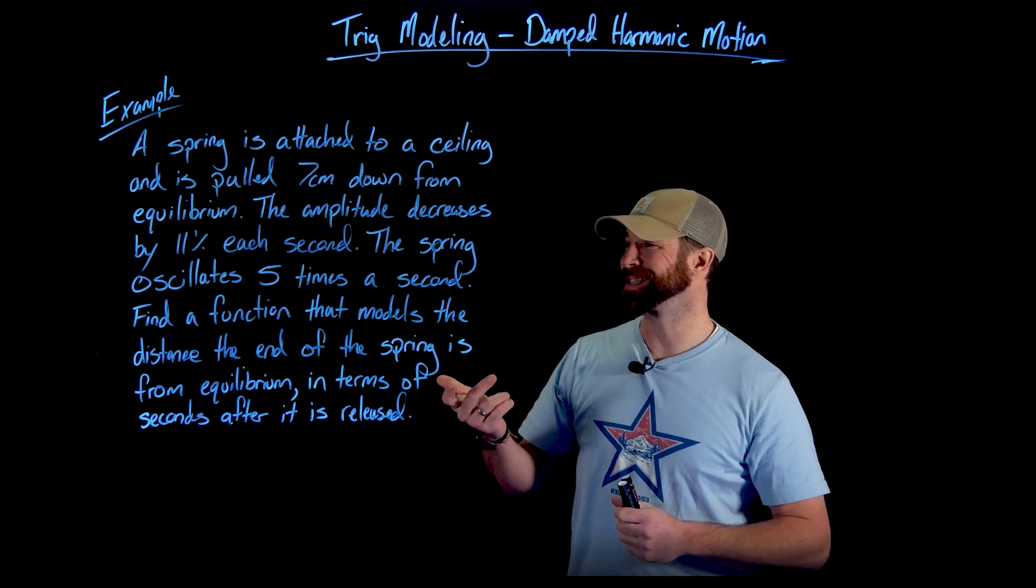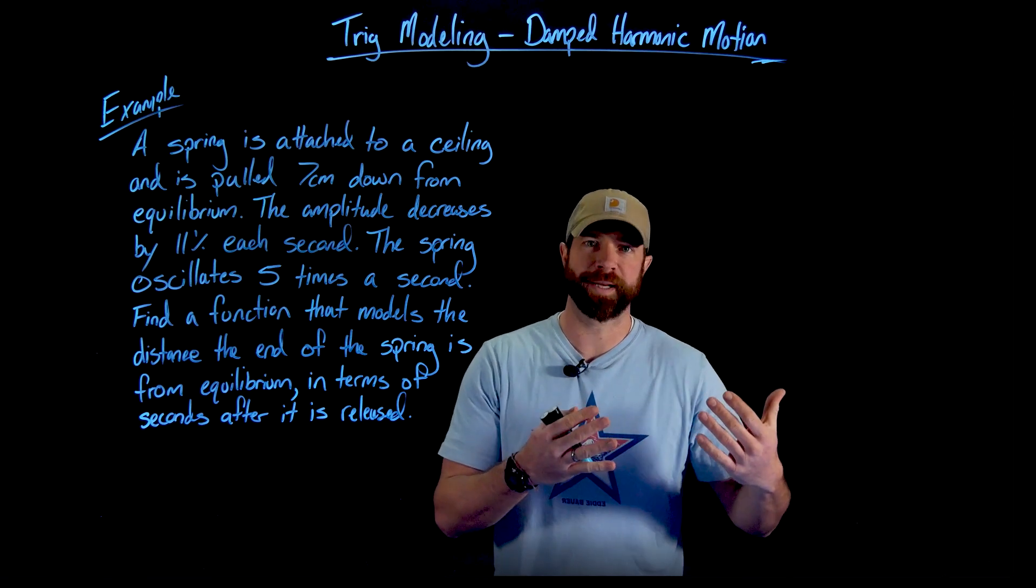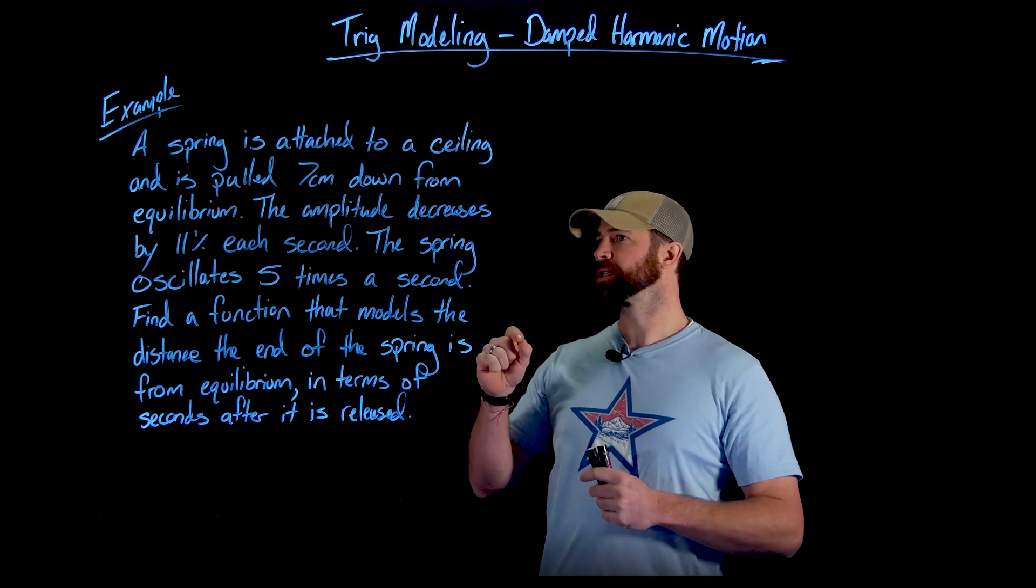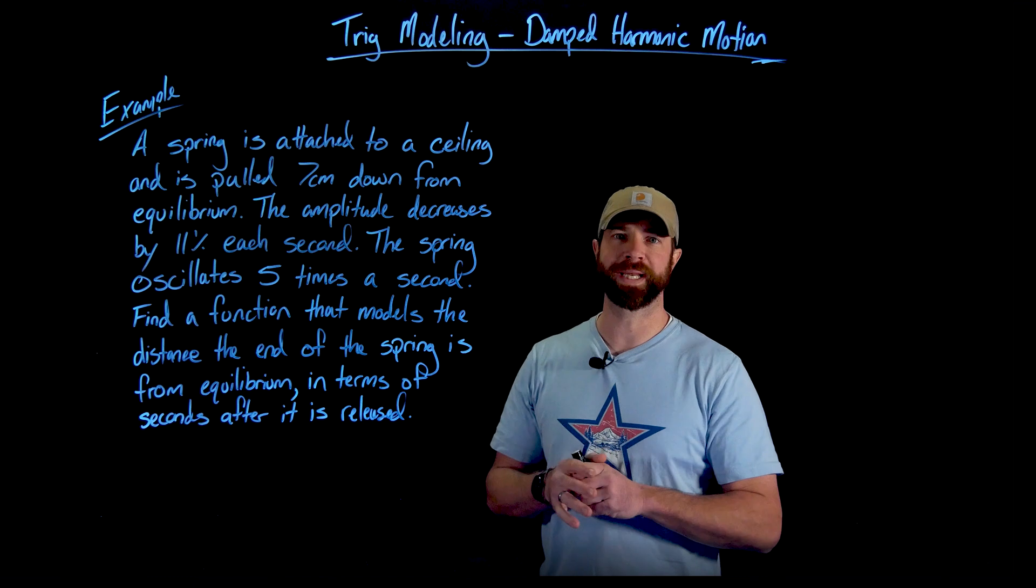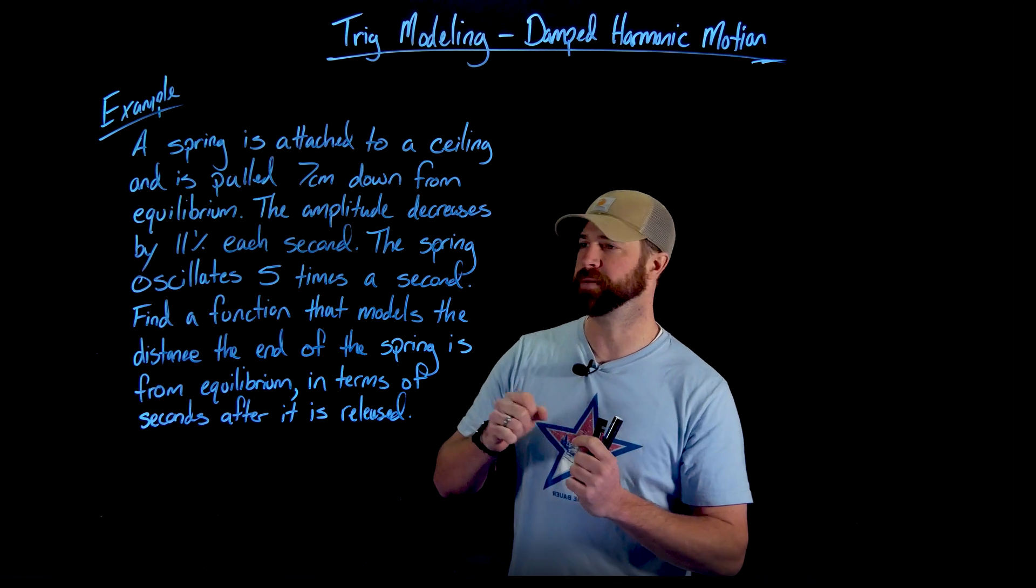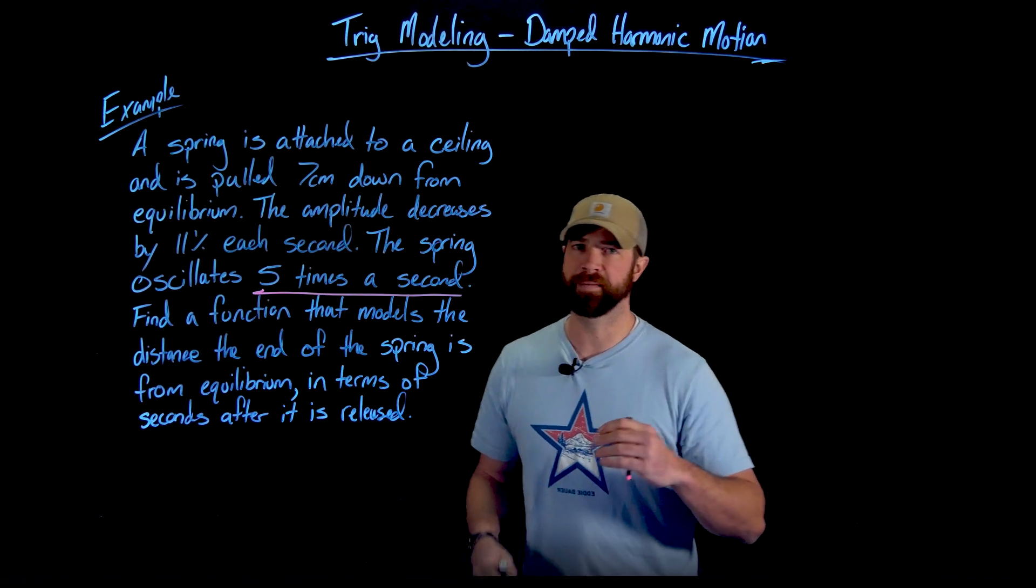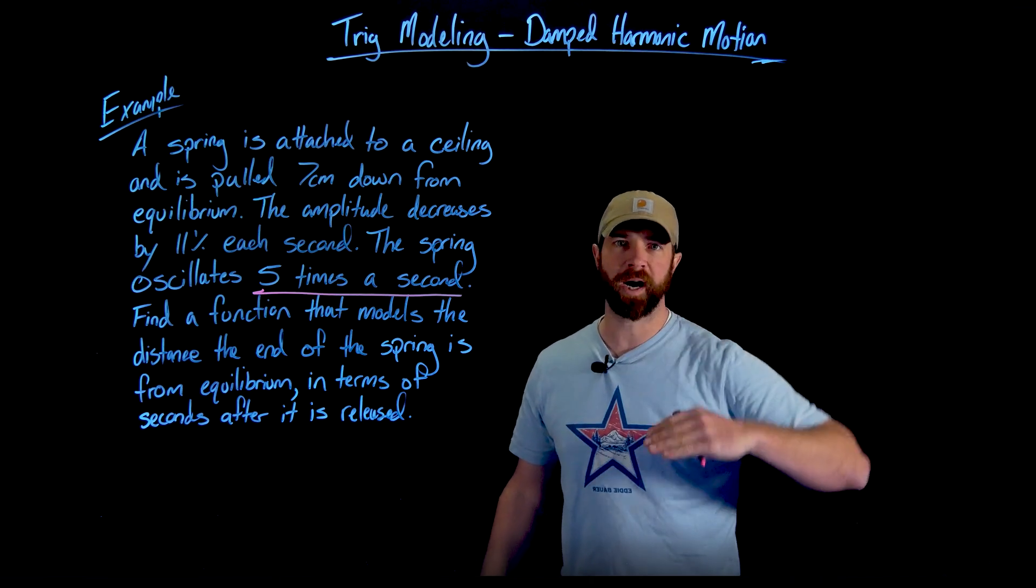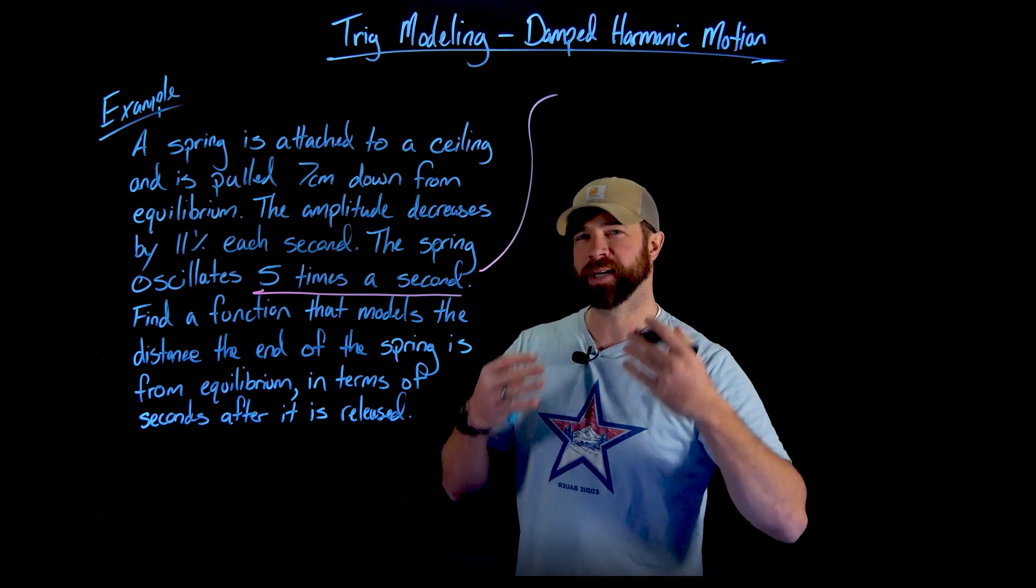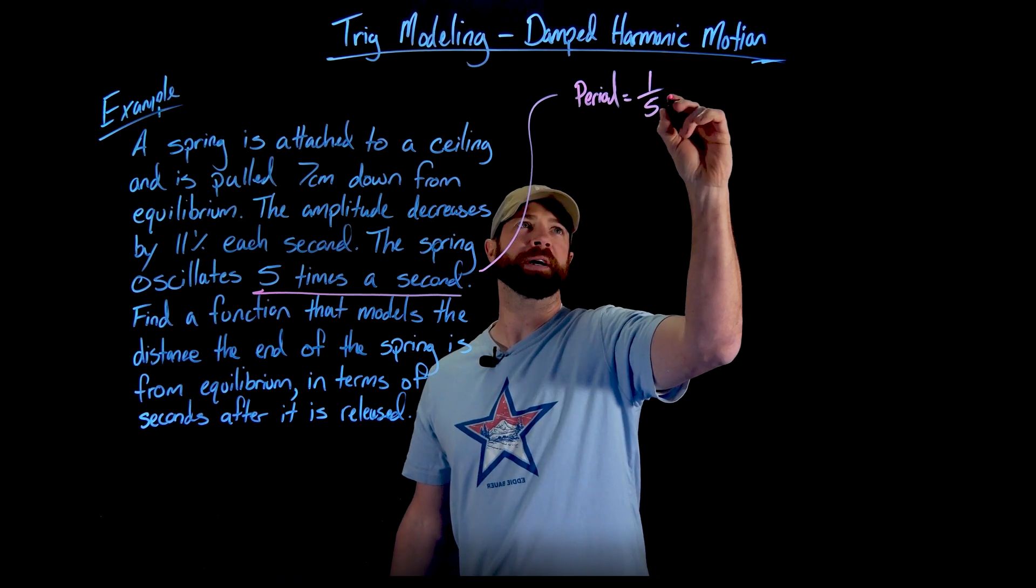We're told also the spring oscillates five times a second, and then we're being asked to find a model for this situation. There's a couple different ways that we can attack this, but let's first attack the trig part of the function. So what we need to do is have this oscillation. Importantly we need to talk about where the midline would be and then the period of this. This statement right here is going to have us deal with the period. So what this means is every second this spring makes five up and down complete motions.